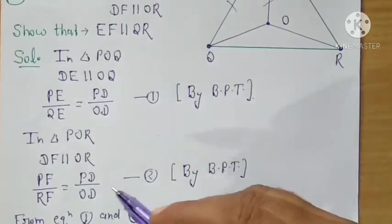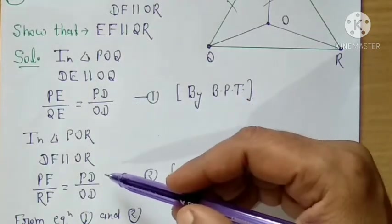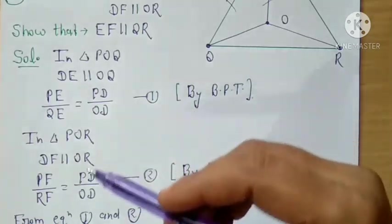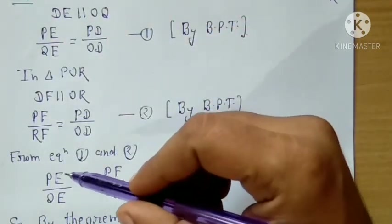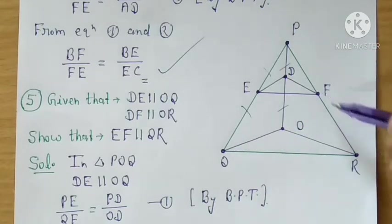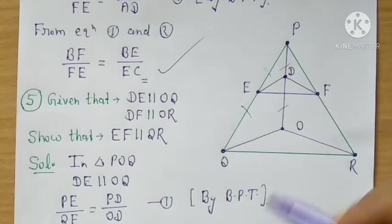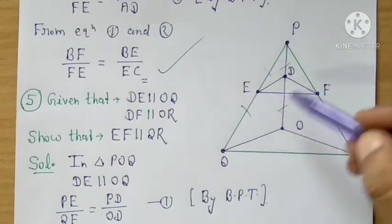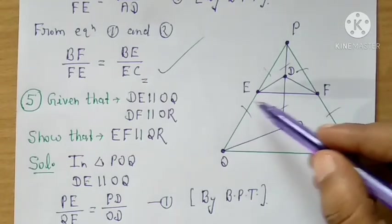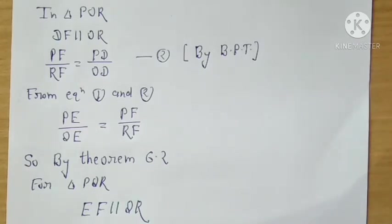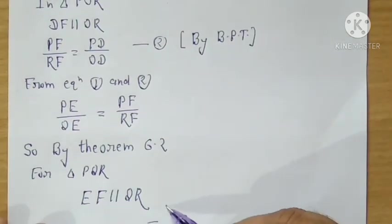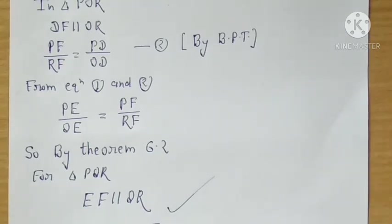Comparing equation 1 and equation 2, both have PD upon OD on the right-hand side. Since RHS is equal, LHS must be equal: PE upon QE equals PF upon FR. This means the ratio of one side of triangle PQR equals the ratio of the other side — so by the Converse of BPT, or Theorem 6.2, EF is parallel to QR in triangle PQR. This is the most important question — it has appeared in exams many times. Okay students, goodbye.